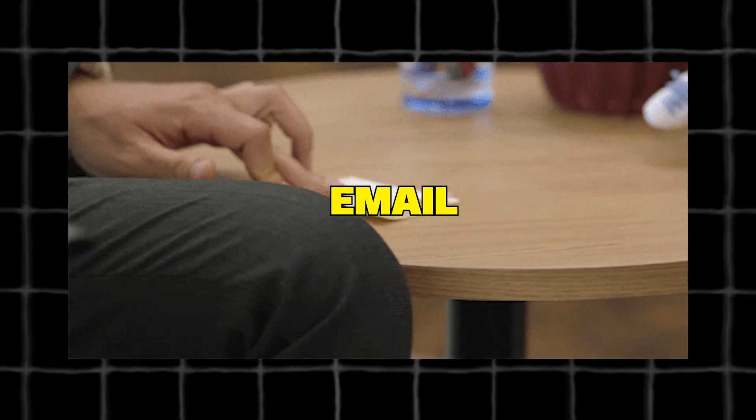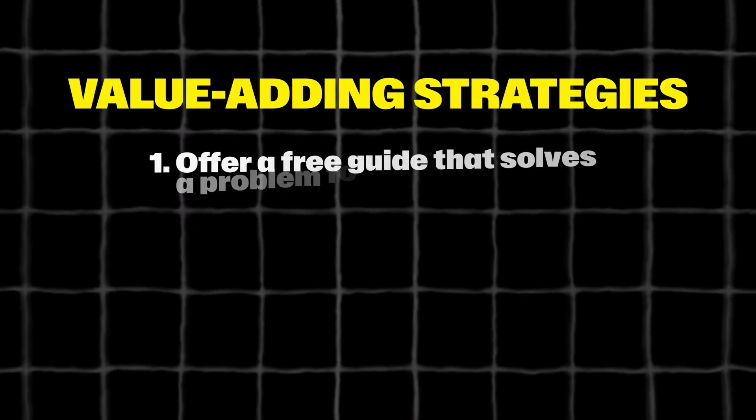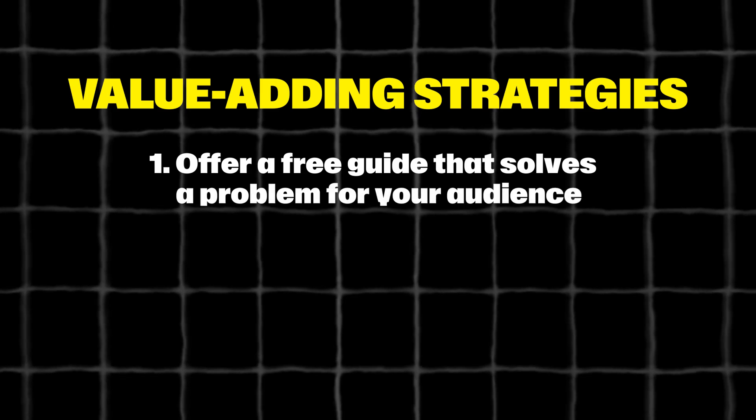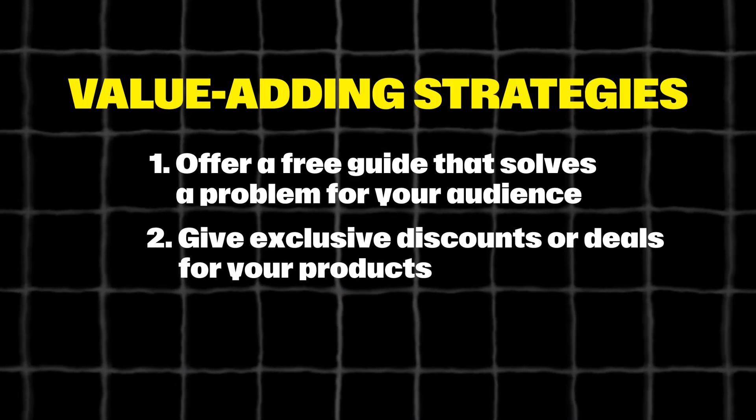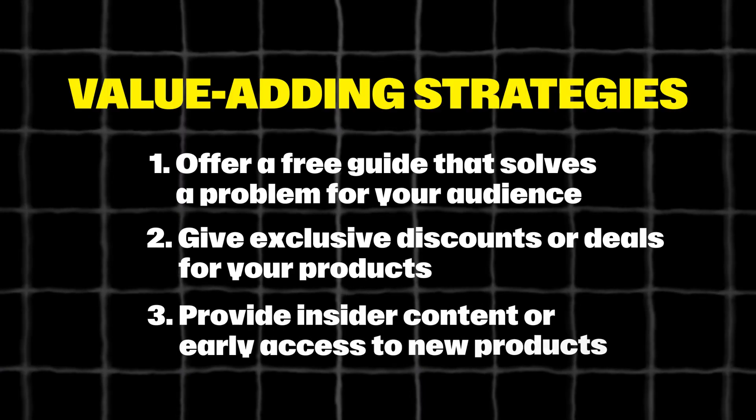Before you set up any automation, it's really important to have a strategy in place that will help you motivate people to share their email with you. We always recommend offering value first, such as: here's a free guide that I created — go ahead and give me your email and I'll send it over. Or you can offer a discount code to some of your products, or give them inside access to a community that you own. Any way where you can offer value is a great strategy to build your email list.